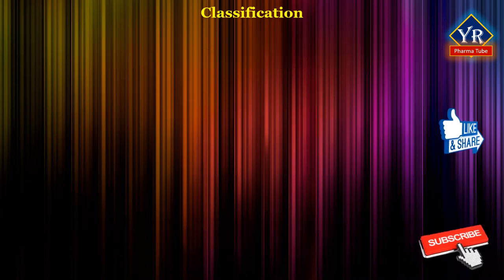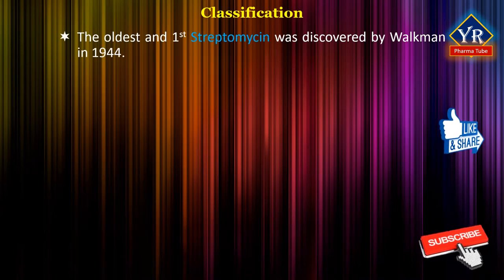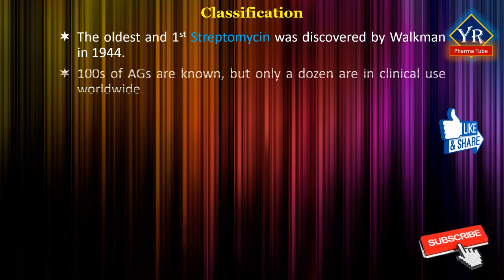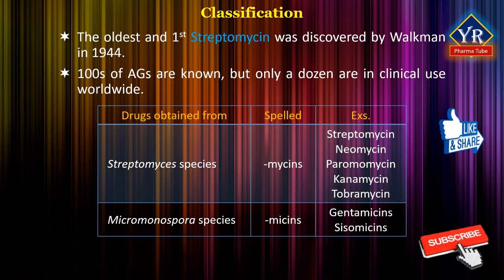The aminoglycosides are among the oldest antibiotics. The first one, streptomycin, was discovered in 1944. About hundreds of aminoglycosides are known but only a dozen are in clinical use worldwide. The majority have been obtained as fermentation products from the actinomycetes genus Streptomyces. The drugs included in this group are streptomycin, neomycin, paramomycin, kanamycin and tobramycin.